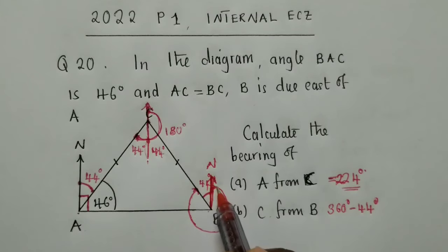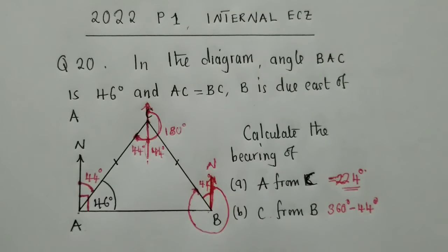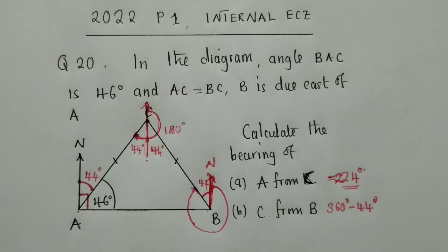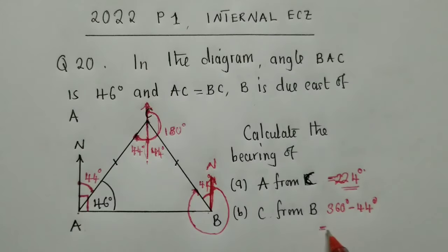But we just take away 44, which is right here. We remain with the bearing from here up until it touches there. So, what are we getting when we say 360 minus 44? It's giving us 316 degrees. So, this is our solution.